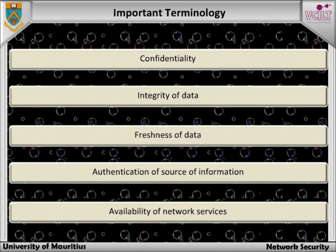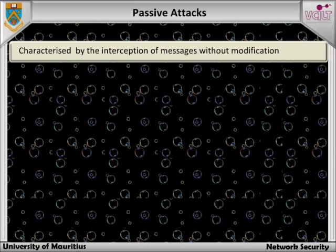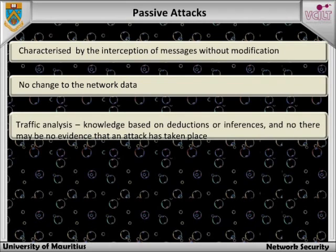In general, attacks on data networks can be classified as either passive or active. A passive attack is characterized by the interception of messages without modification. There is no change to the network data or systems. The message itself may be read, or its occurrence may simply be logged. Identifying the communicating parties and noting the duration and frequency of messages can be of significant value in itself.